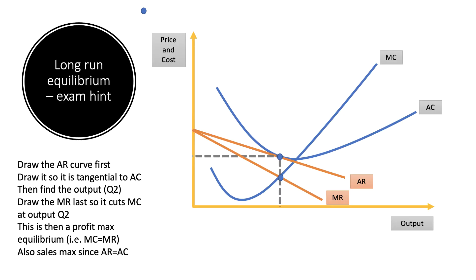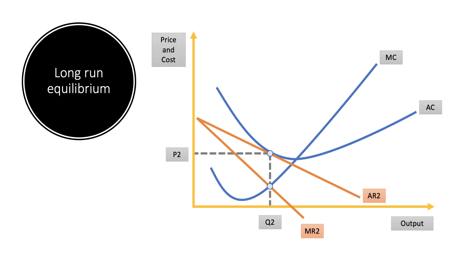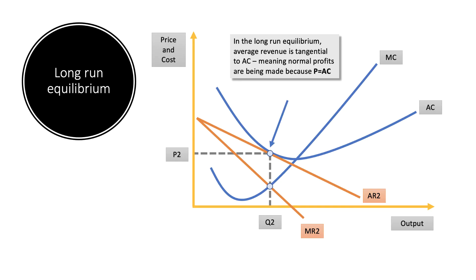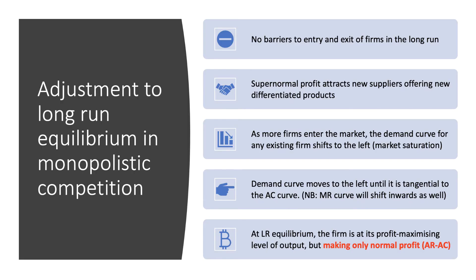That is the long-run equilibrium in the market, and it is also a sales-maximization point because the firm is selling as much as it can consistent with covering its costs. In long-run equilibrium, average revenue equals average cost — just normal profits are being made. Because there are no barriers to entry and exit, profit attracts new suppliers offering differentiated products. As more firms enter, the demand curve for existing firms shifts left until it is tangential to the average cost curve.